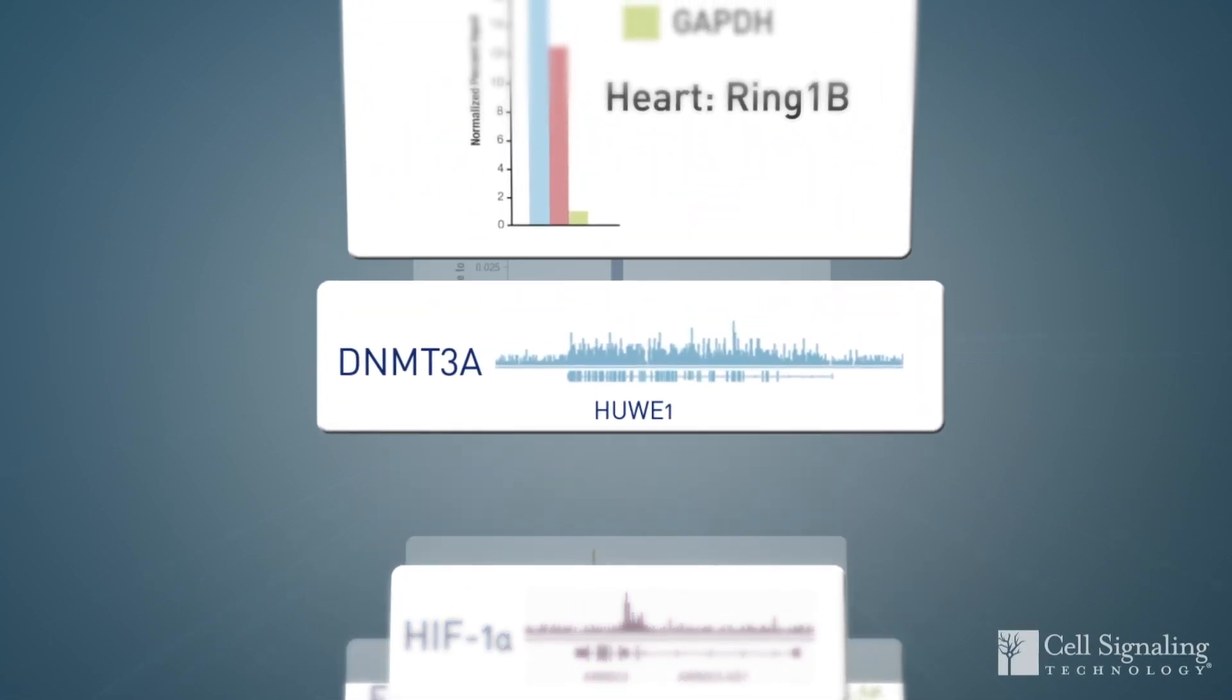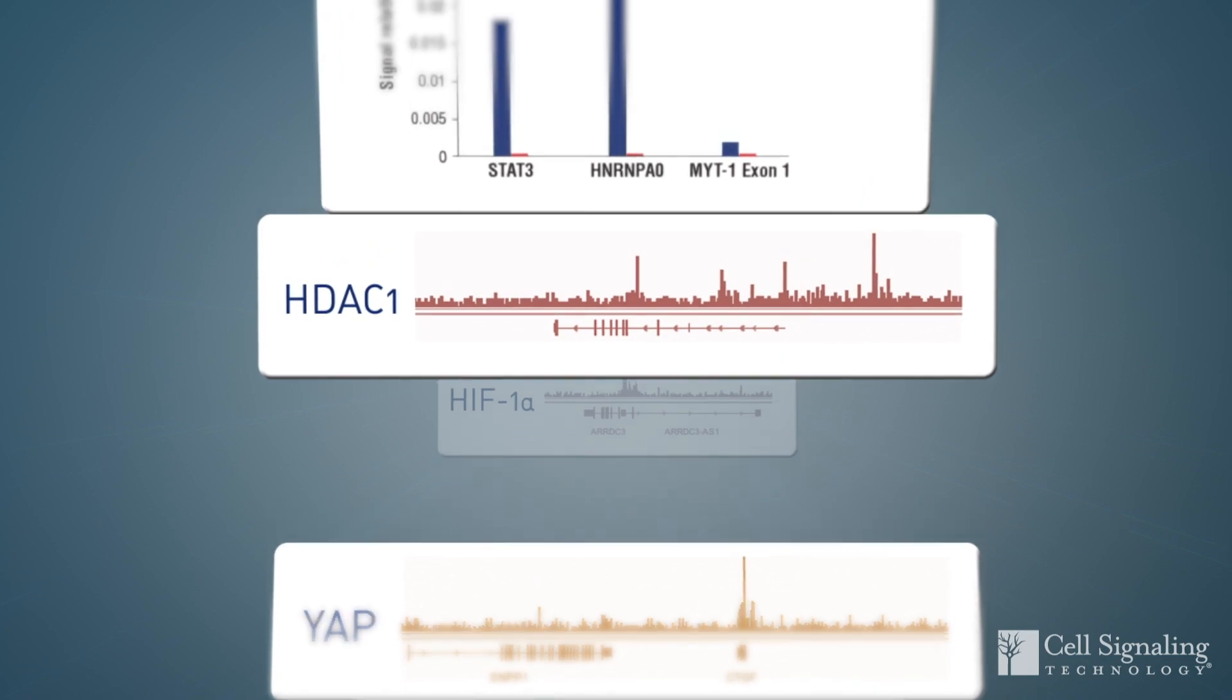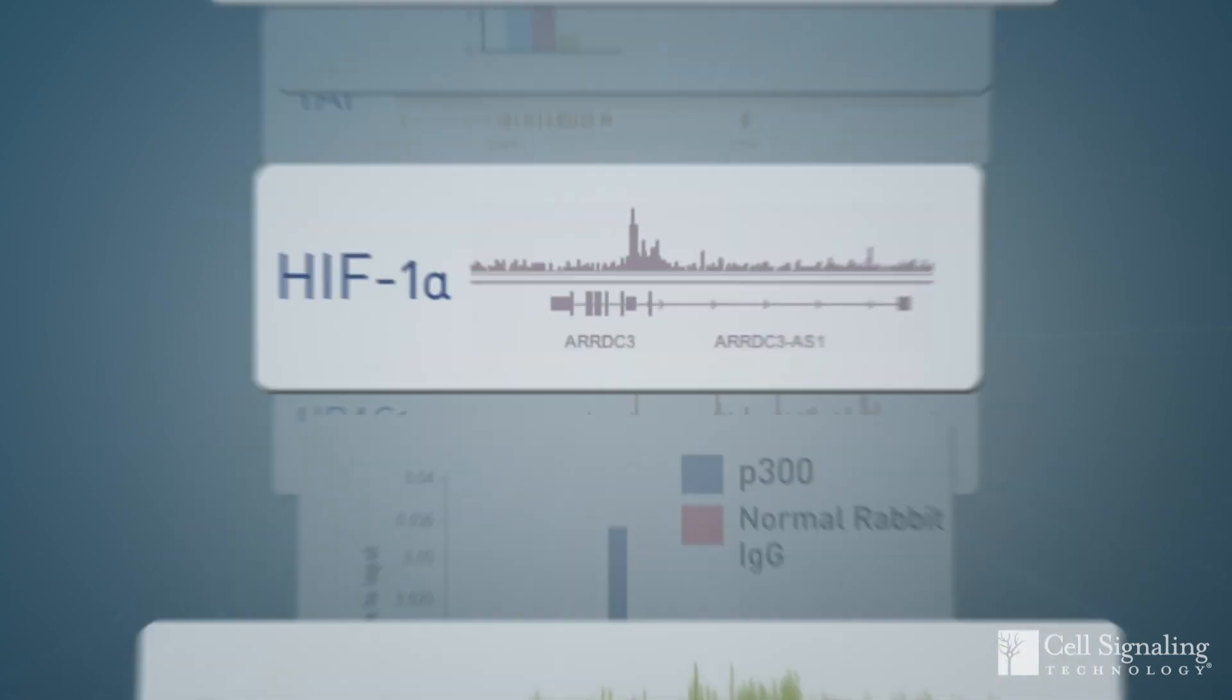Researchers use chromatin immunoprecipitation, or ChIP, to identify and characterize protein-DNA interactions in the context of chromatin.